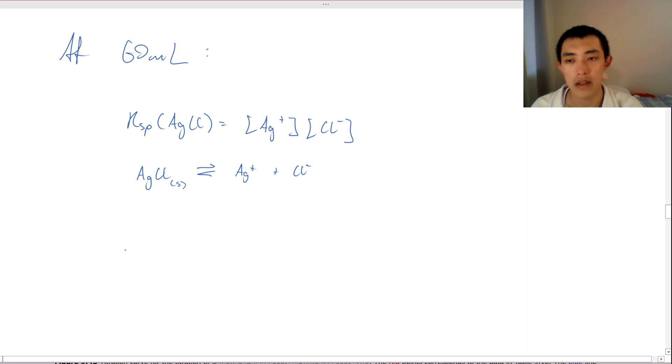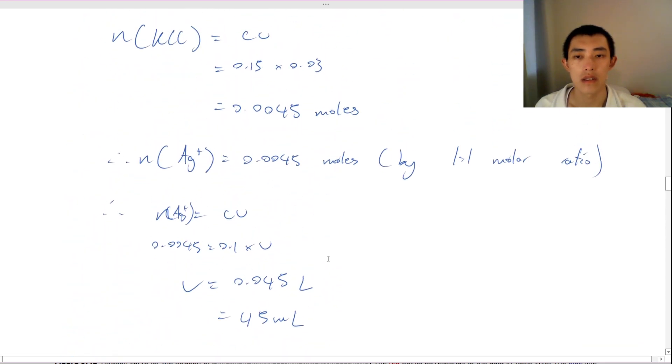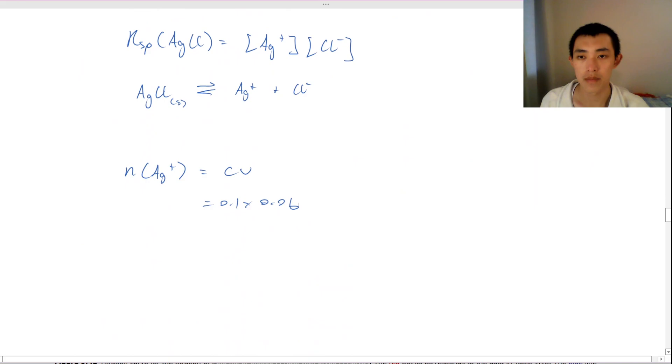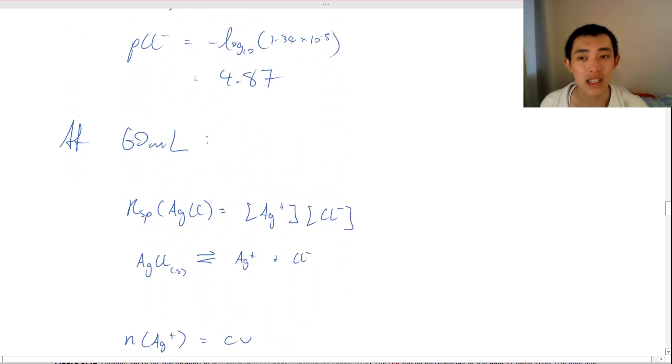So, moles of silver, CV is equal to 0.1 times 0.06, which is going to give me 0.006 moles, fantastic. Now, you might think, okay, and then I simply divide by the volume of 60 milliliters. That is not going to be the final volume though. Why is that?